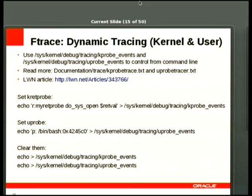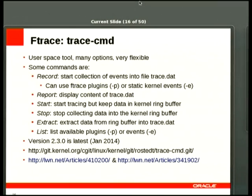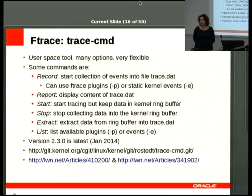You can do the same for uprobes — putting a probe in bash at a particular address by storing it in the uprobe_events file. ftrace reads those files and does whatever it's told. You can clear them by echoing nothing into the file. An aid to remembering all the options is trace-cmd, a user-space tool that acts as a friendlier cover on top of the ftrace engine.